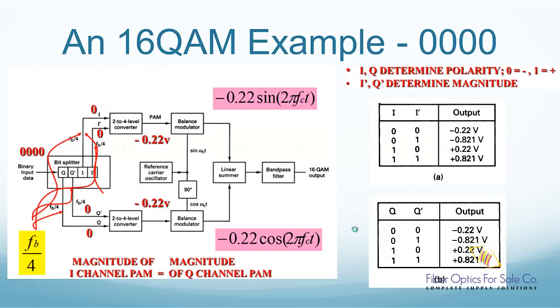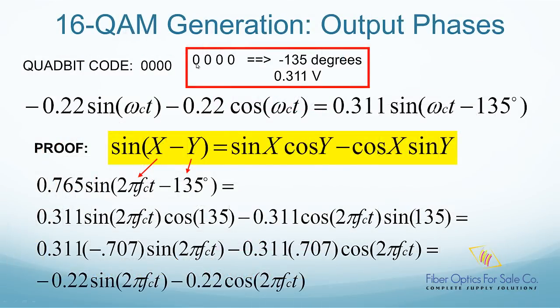Here is the proof that quad bit 0000 is modulated as a sine wave with an amplitude of 0.311 volts and a phase shift of negative 135 degrees. You can now pause for a moment to study the proof.